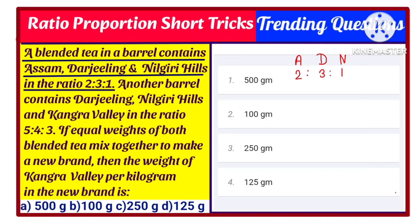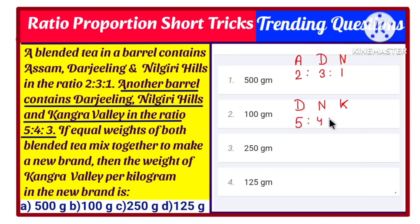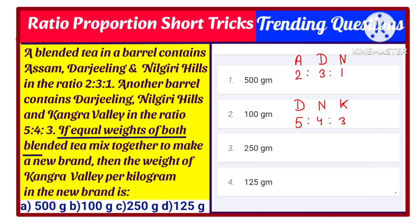Now it is said another barrel contains Darjeeling, Nilgiri and Kangara valley in the ratio 5:4:3. So another barrel is there where we have Darjeeling (D), Nilgiri (N) and Kangara valley — let us assume it to be K — and the ratio is given to be 5:4:3.